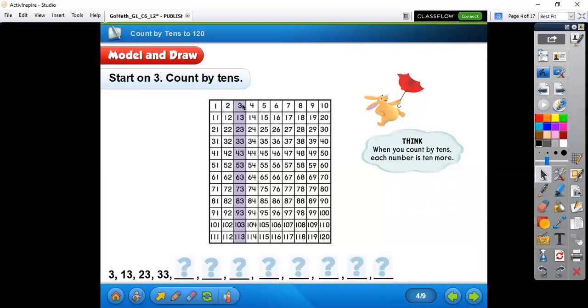So on this one we're going to start at number three and then we're going to count by 10. So 10, 3, 13, 23, 33, 43, 53, 63, 73, 83, 93, 103, and 113. Excellent job.